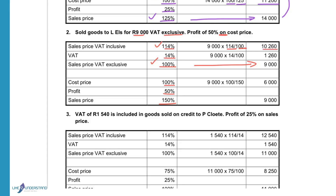To calculate the VAT: 14 divided by 100 times the amount gives 1,260. The cost price is calculated on the sales price excluding VAT. So we show that the sales price of 150% equals 9,000. To calculate the cost price: 100 divided by 150 gives 6,000.